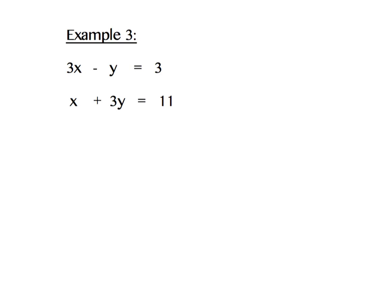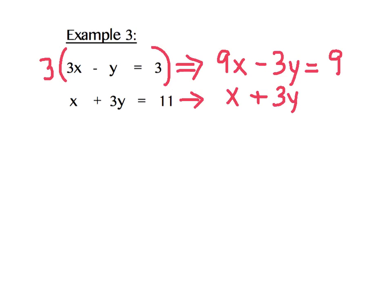So we are going to create opposites using multiplication. I'm going to focus on the y column because they are opposite signs. But in order for them to be truly opposites, I'm going to take this first equation and multiply the whole thing by positive 3. This is going to work just like the distributive property, but we are going to multiply every piece of the equation by 3, giving us 9x minus 3y equals 9. I'm then going to rewrite my second equation just the way it was.